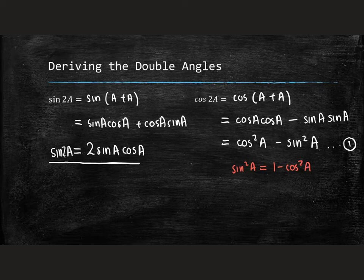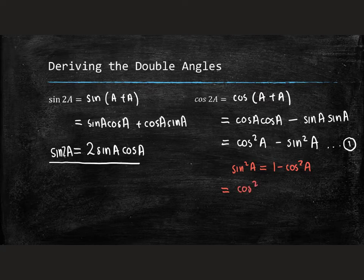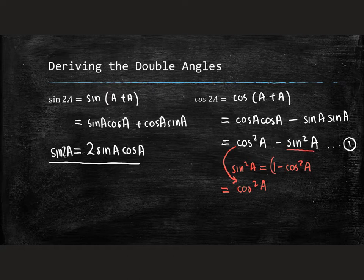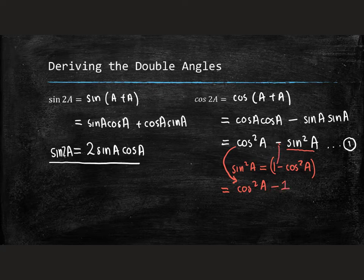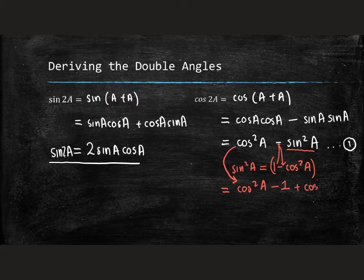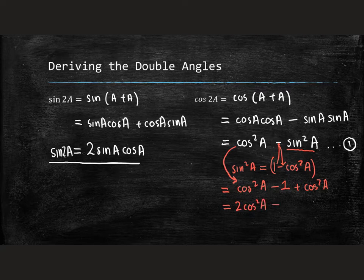So we could rewrite number one to look as follows. It would stay cos squared a. But instead of sin squared, I'm going to write 1 minus cos squared a, remembering the negative. So the negative there with this one makes negative one. That negative with this negative makes a positive. And we get cos squared a. And so if we neaten this up, we've got 2 cos squared a minus 1. Let's call this form number two.